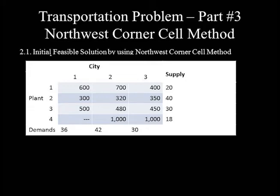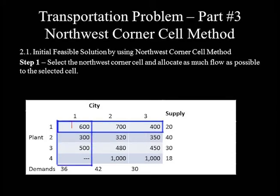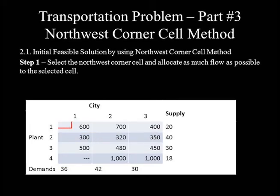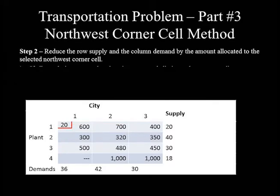The second question asks for the initial feasible solution using the Northwest corner cell method. Step one: select the Northwest corner cell — the top-left cell — and allocate as much flow as possible. Step two: compare the supply and demand for the selected cell; the supply is 20 and demand is 36, so allocate the smaller value, 20, to this cell. Then reduce row supply by 20: 20 minus 20 equals 0.